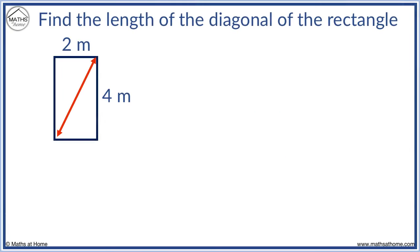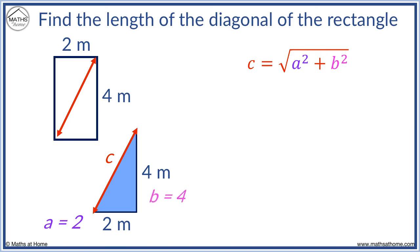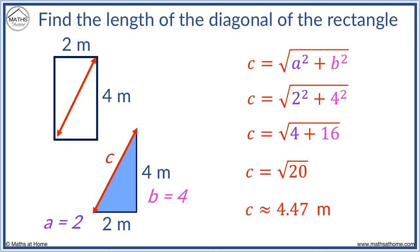In this example, we take the right-angled triangle below the diagonal. The height is still 4 and the base is still 2. Therefore, a equals 2 and b equals 4. 2 squared equals 4 and 4 squared equals 16. 4 plus 16 equals 20. The length of the diagonal is the square root of 20, which is 4.47 meters.